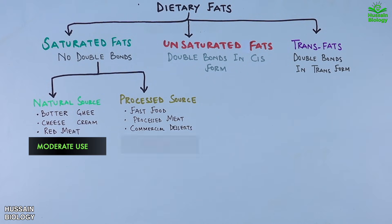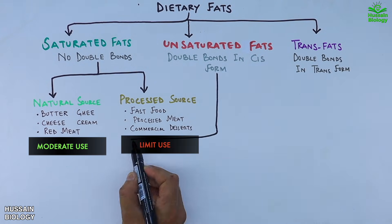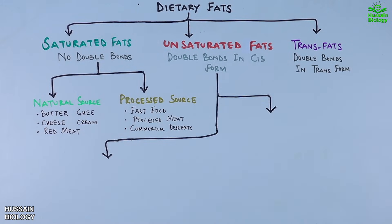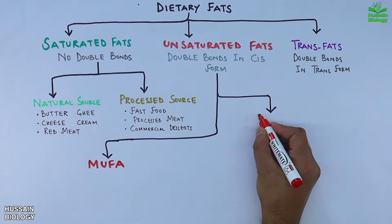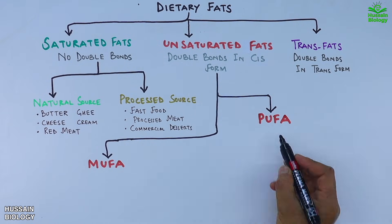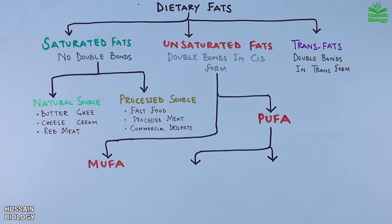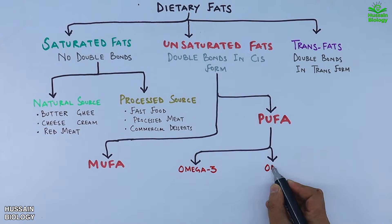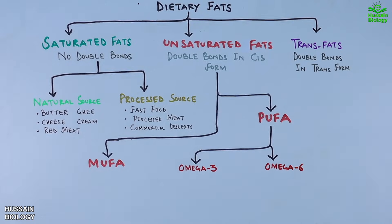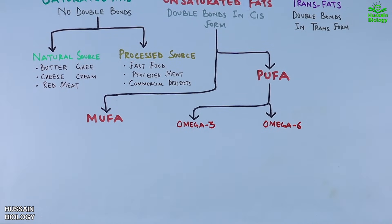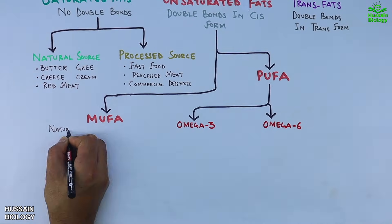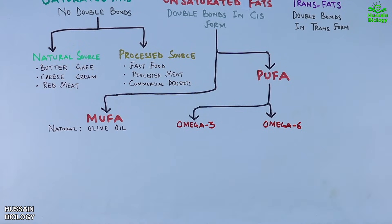Next we have unsaturated fats. These contain double bonds in the cis form and are further divided into MUFA — monounsaturated fatty acids — and PUFA — polyunsaturated fatty acids. PUFA can be further divided into omega-3 and omega-6 fatty acids. Getting to MUFA first, MUFA is found naturally in olive oil, canola oil, avocado, nuts, seeds, and cold-pressed oils.